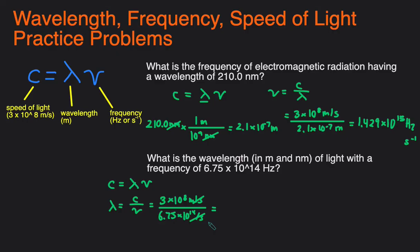So when we plug this into the calculator we'll get 4.44 times 10 to the negative 7 meters. So that'll be the answer in meters. Then we have to convert this to nanometers.